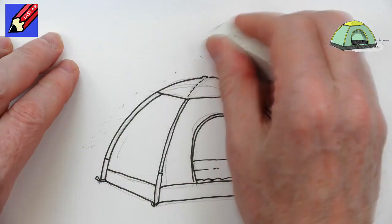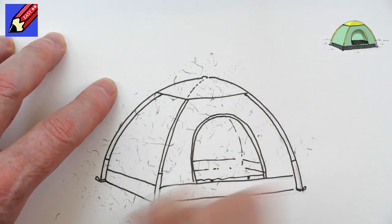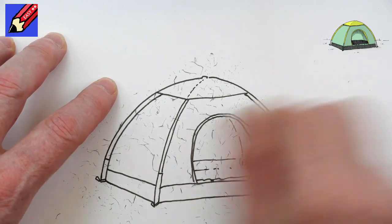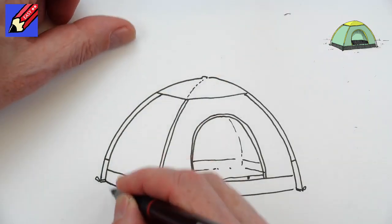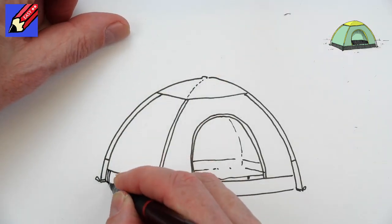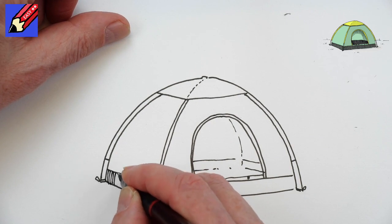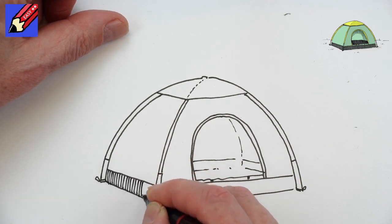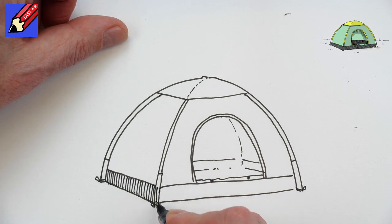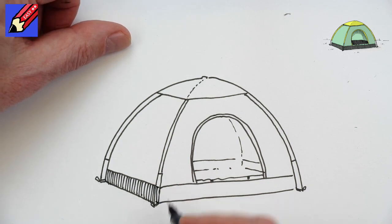When you're absolutely sure the ink is dry, you can erase those pencil lines. To keep this neat and tidy, I'm going to shade this in vertically here rather than scribbling or anything like that.